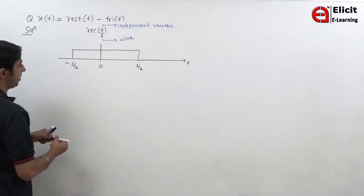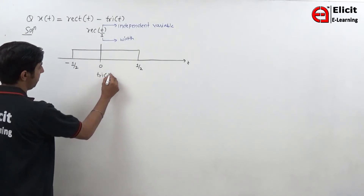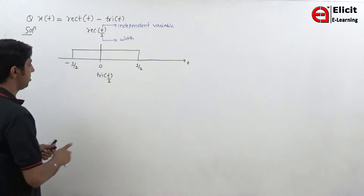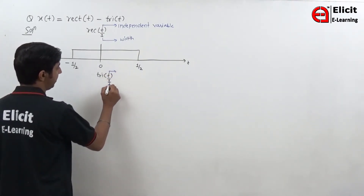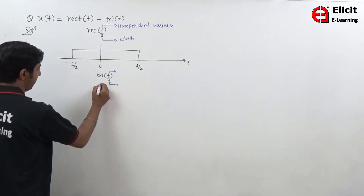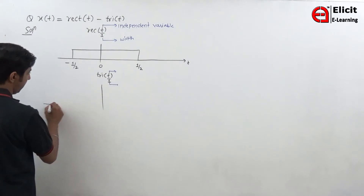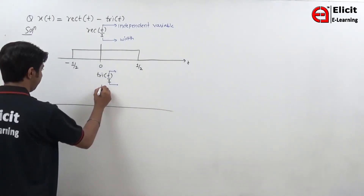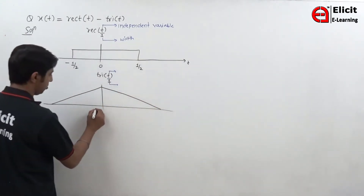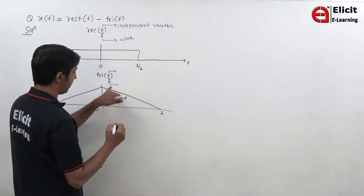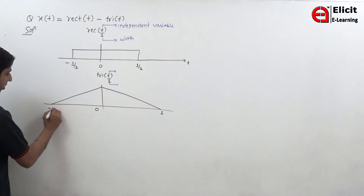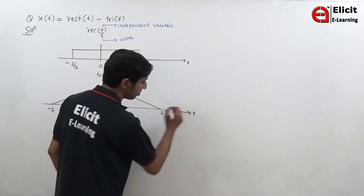Now let me represent another signal which is tri of small t. Same here, you can write it as small t by 1. Small t represents the independent variable, and 1 is the one-sided width. The signal will look like this — this is tri of small t. This is 0, this is 1 one-sided, and this is minus 1. The x-axis is small t.